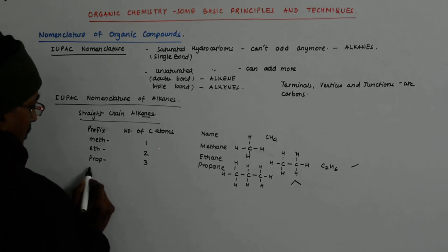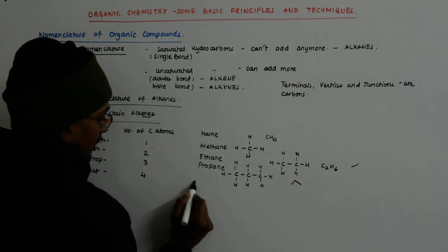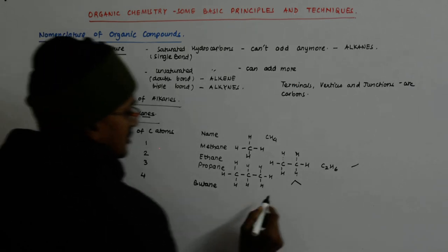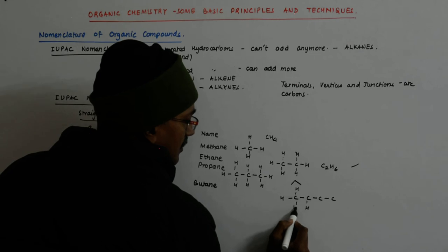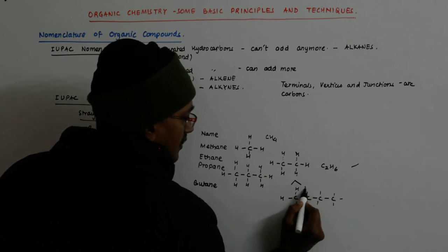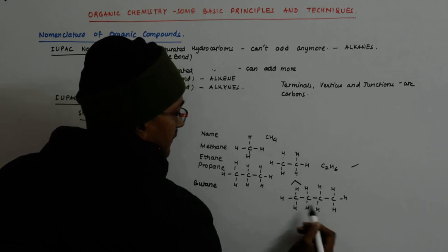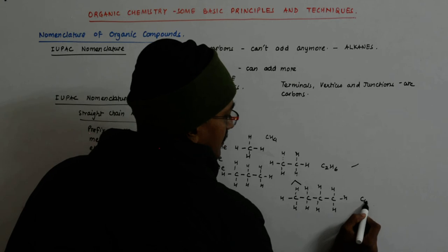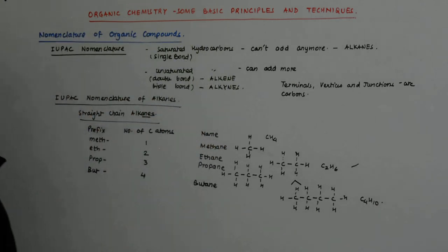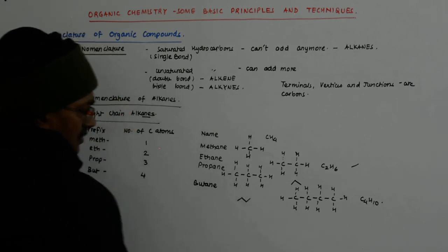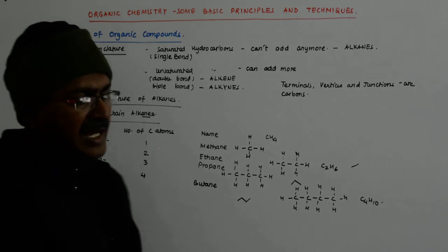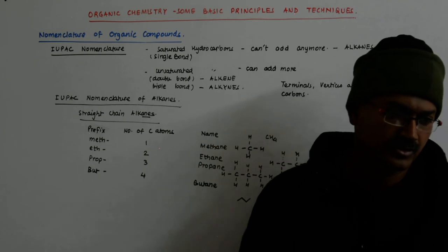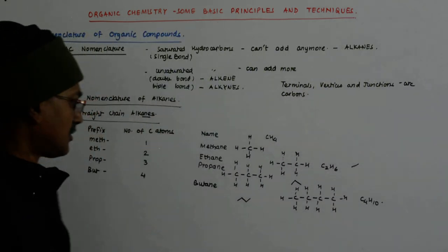Butane is 4, butane structure, 4, straight chain, C4H10, line diagram, so simple, 1, 2, 3, 4, they are all carbons, and you do not show the CH bonds, that you can take care of, pretty simple.